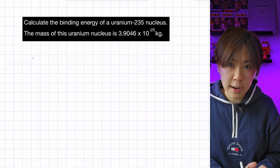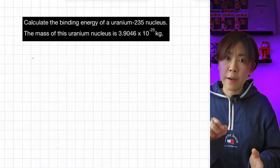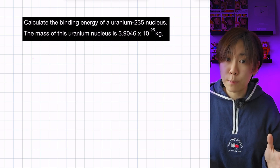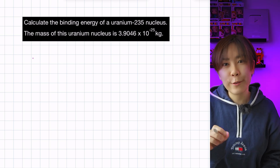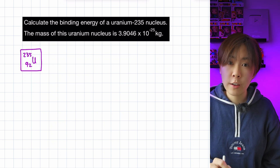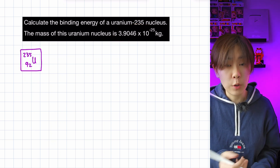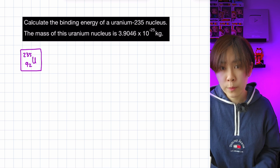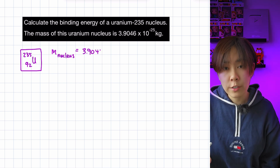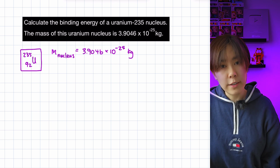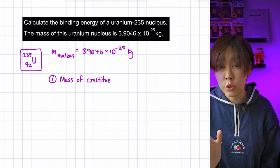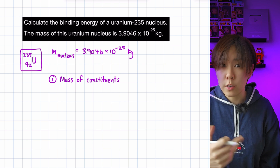Let's look at an example calculation where we are asked to find the binding energy of a nucleus using its mass defect. We are considering a uranium-235 nucleus, and we are given the mass of the whole nucleus in this question. I'm going to use m subscript nucleus to denote the mass of the nucleus. First, we need to calculate the mass of the constituent protons and neutrons.